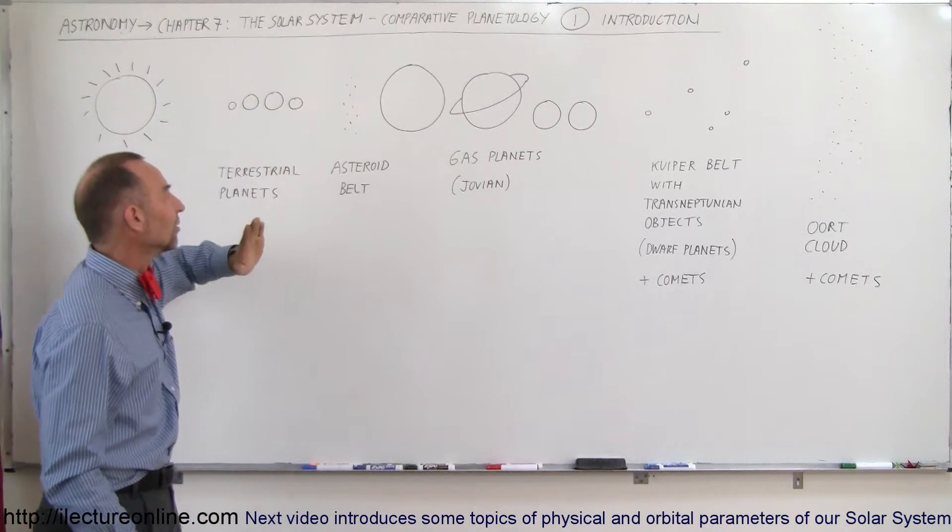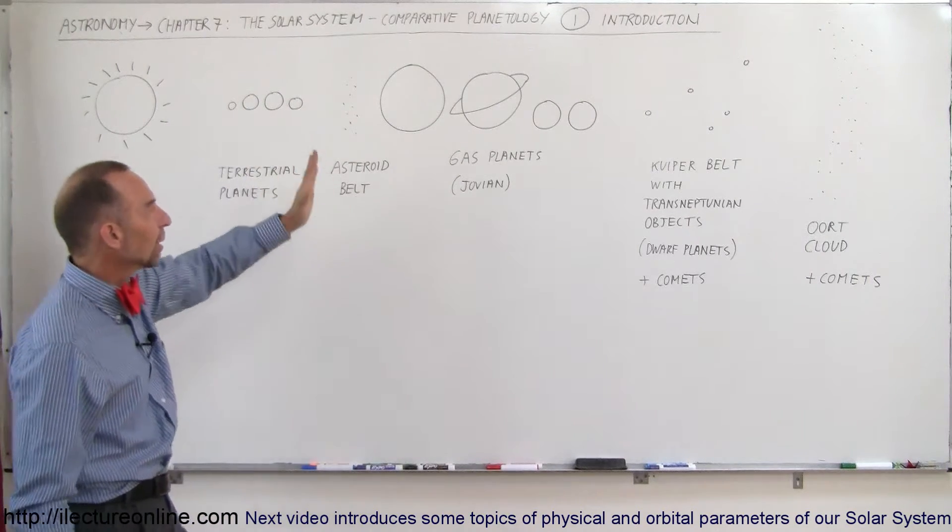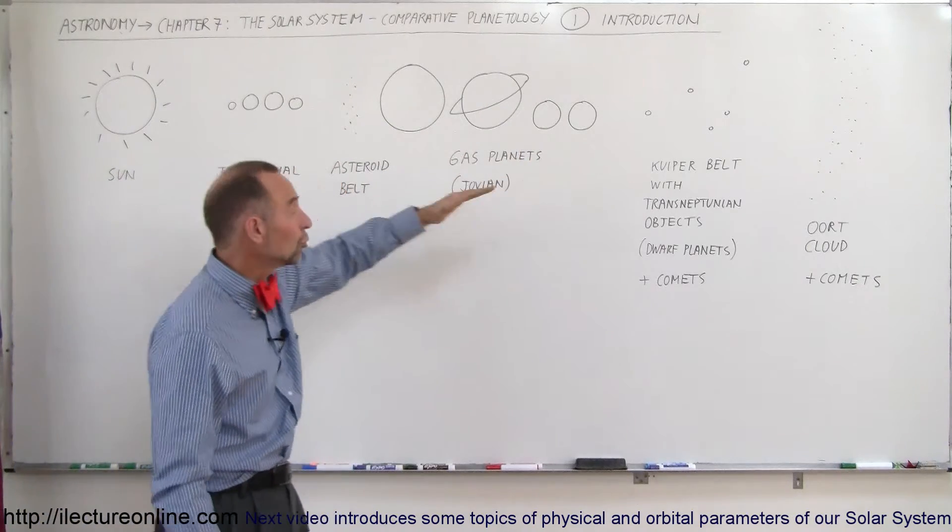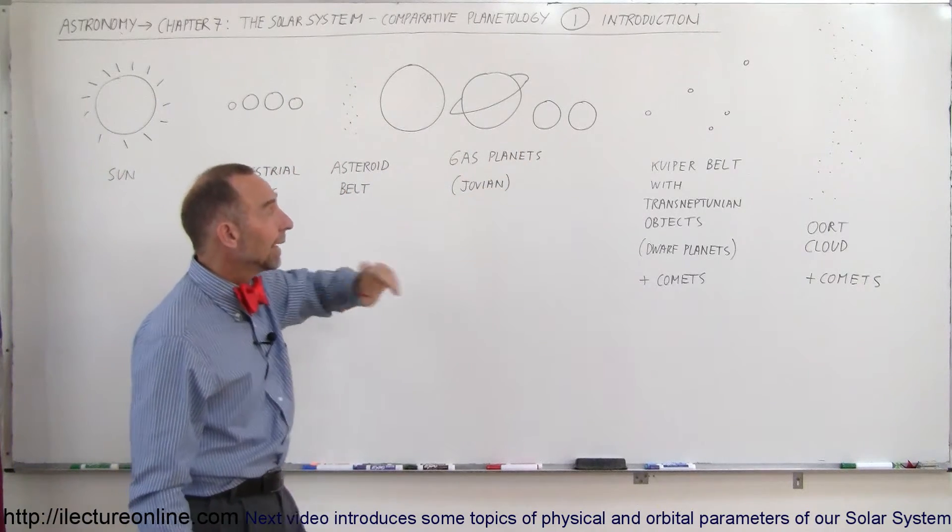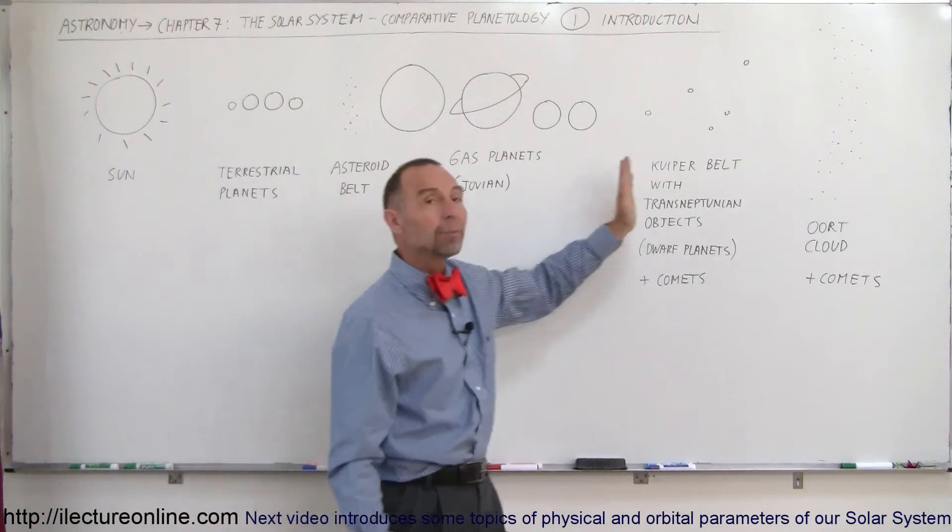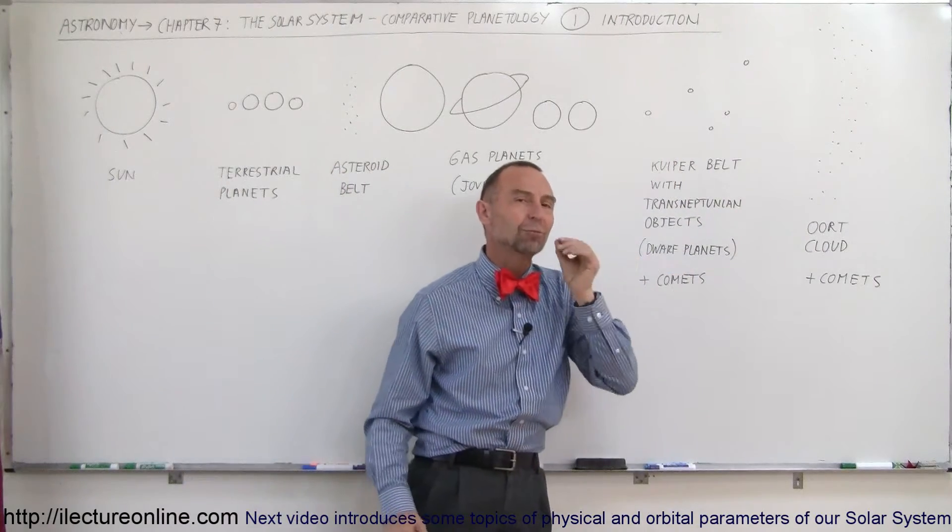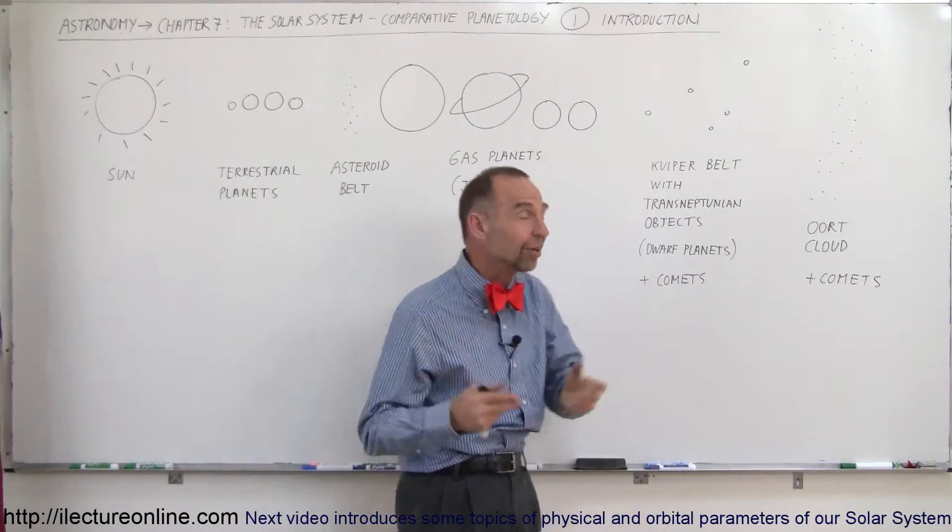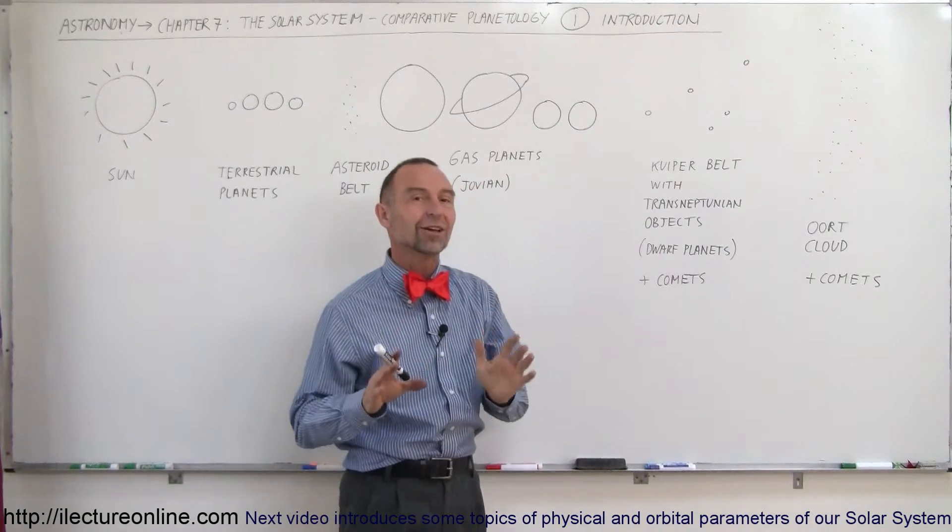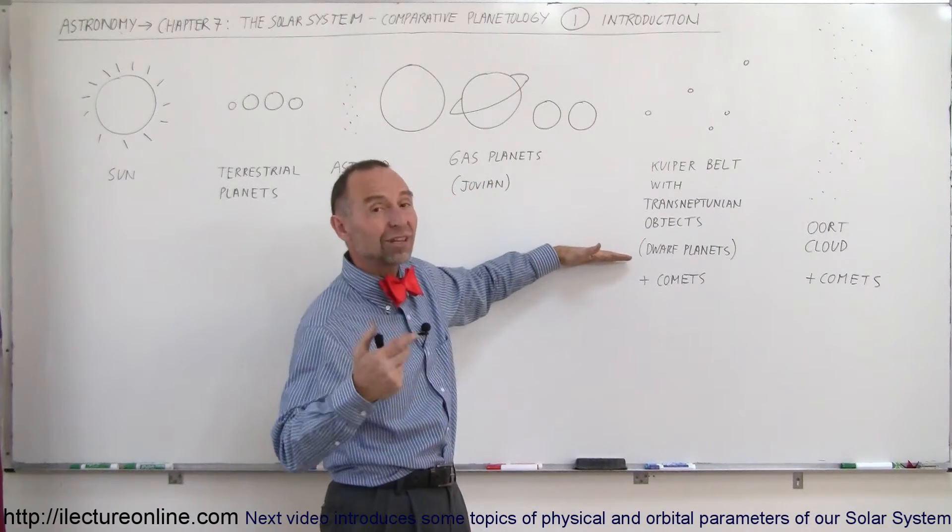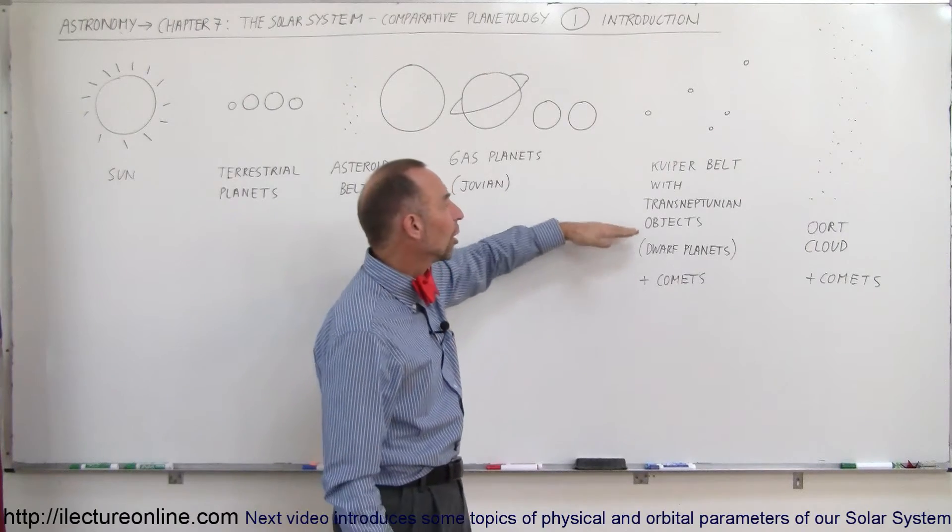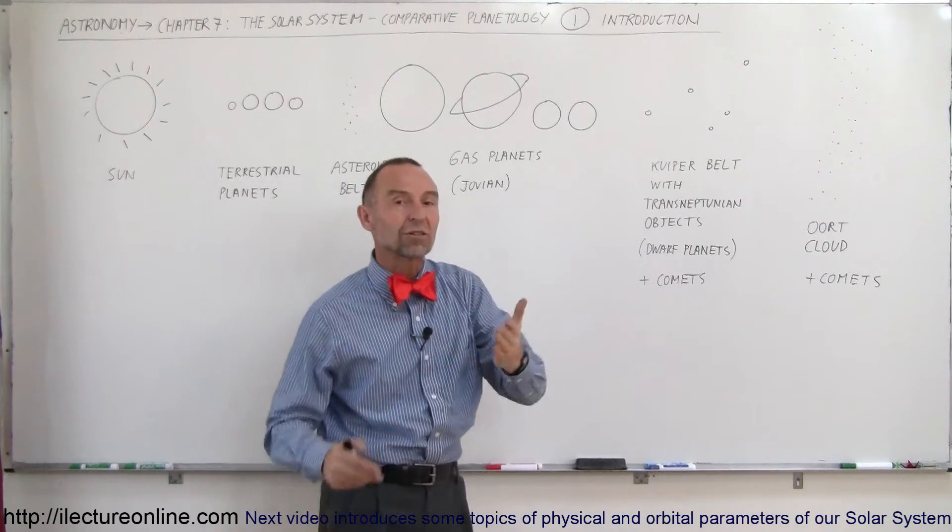But we have, of course, the four terrestrial planets. Then we have the asteroid belt. Then we have the four gas planets, also known as the Jovian planets. And then we have what we call the Kuiper belt beyond that. Now, we used to have Pluto as one of the nine planets, but Pluto is no longer considered a planet. Now we find that there's a whole bunch of objects like Pluto out there, so we call them trans-Neptunian objects.